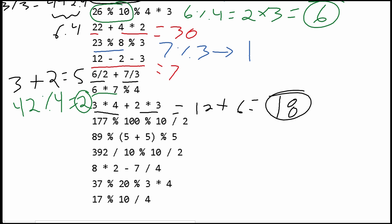We next have 177 modulus 100, which gives us 77. Then we take the modulus of 77 using 10, and the result is 7. We divide this by 2, so this gives us the answer of 3.